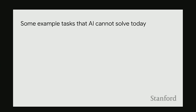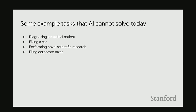I want to start by giving some motivation around tasks that AI cannot solve today. It cannot diagnose a medical patient, it can't fix your car, it can't perform novel scientific research, it can't file corporate taxes, and it can't do many other things. I'm not saying AI is supposed to completely do these things, but at least it should be able to assist people doing them. What all these tasks have in common is that domain knowledge is just as important as intelligence.